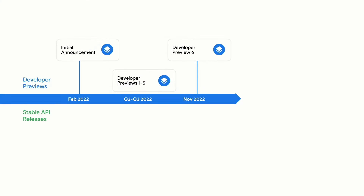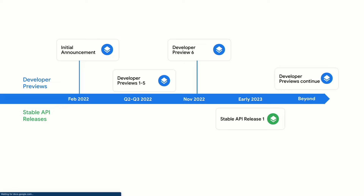Since our initial announcement in February, we've been busy releasing developer previews, which allow you to integrate and test all of the APIs I just mentioned. Right now, you can check out what's new in Developer Preview 6. We plan to enable testing of the Privacy Sandbox on public mobile devices in early 2023. We'll also release our first stable API release in a future SDK extension, and we will continue releasing developer previews in parallel to stable API releases to expose the latest features.